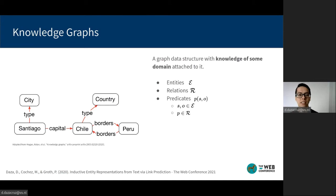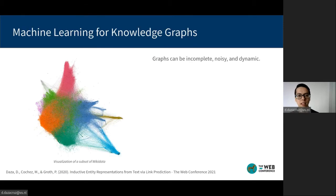Interestingly, we know that this graph is missing some information, like the type of the country Peru. And this is a problem that appears also in large-scale knowledge graphs.